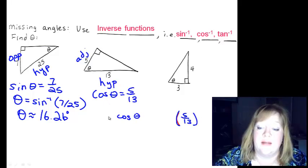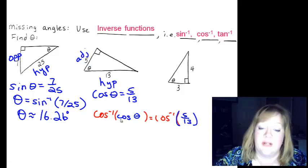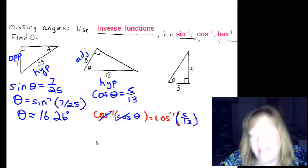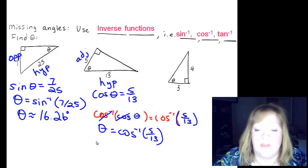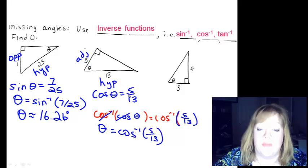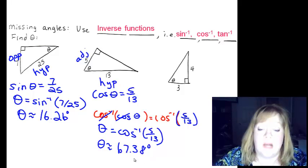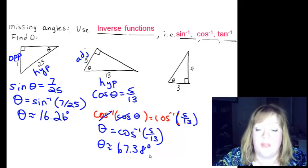So cosine of theta, when you're taking the inverse, you take the inverse of both sides and that cancels that out. Now, I kind of did the extra steps on this one to show you how that worked. But really, all you need to know is you can go from cosine theta equals five over thirteen to theta equals cosine inverse of five divided by thirteen. If you do that out, you should get approximately sixty seven point three eight degrees.